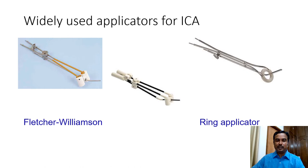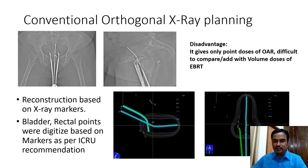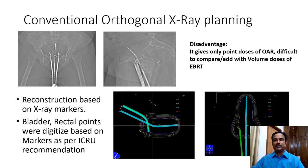This slide shows the widely used applicators for brachytherapy treatment: one is the Fletcher-Williamson and the other is the ring applicator. This slide shows the conventional orthogonal films used for brachytherapy, with X-rays acquired 90 degrees apart — an anterior film and a lateral film. This shows the reconstruction of catheters and dose distribution, with bladder and rectal points marked based on ICRU recommendations. The biggest disadvantage is that this method only gives point doses received by OARs, making it very difficult to correlate with 3D CRT external beam volume doses.